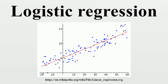In statistics, logistic regression, or logit regression, or logit model is a regression model where the dependent variable is categorical. This article covers the case of binary dependent variables, that is, where it can take only two values, such as pass/fail, win/lose, alive/dead, or healthy/diseased. Cases with more than two categories are referred to as multinomial logistic regression, or, if the multiple categories are ordered, as ordinal logistic regression.